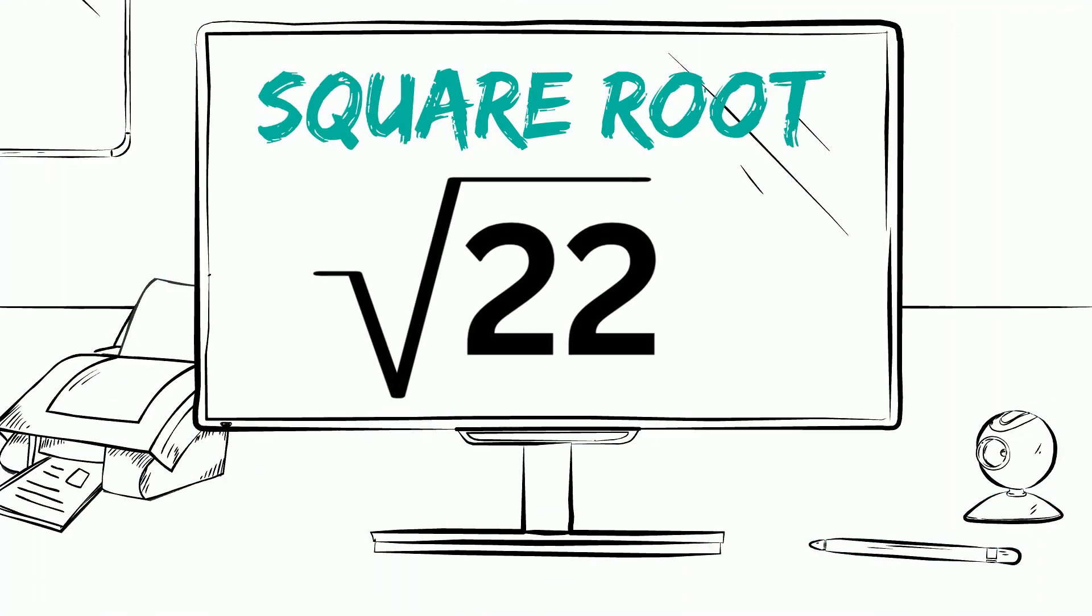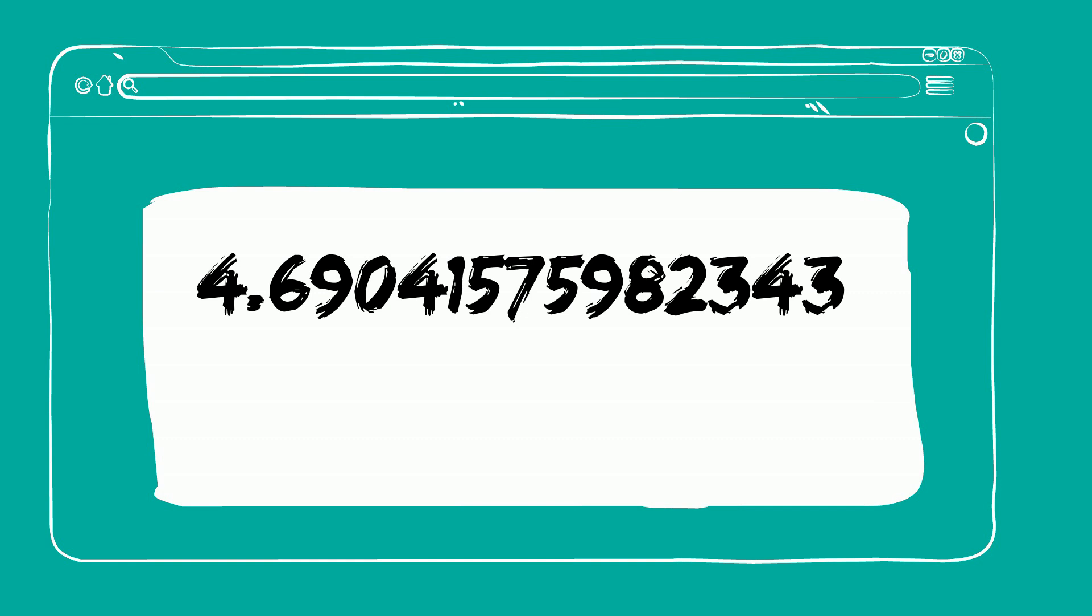Let's take a look at the square root of 22. Square root of 22 is considered a non-perfect square, so it's considered an irrational number. Here it is approximated to 14 digits.